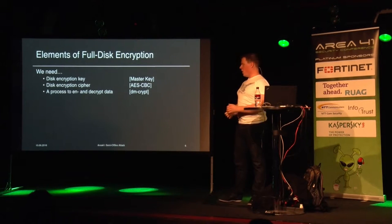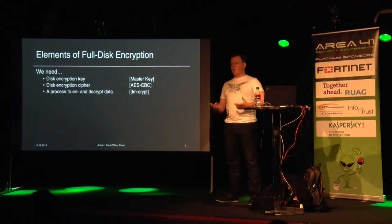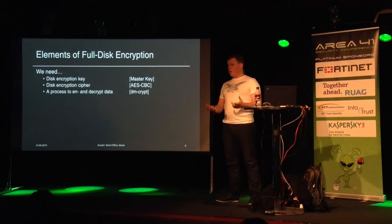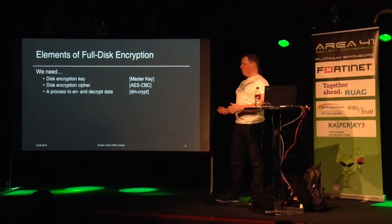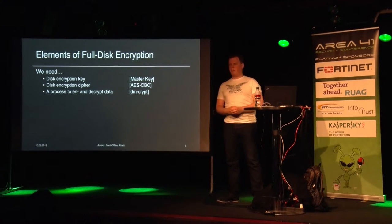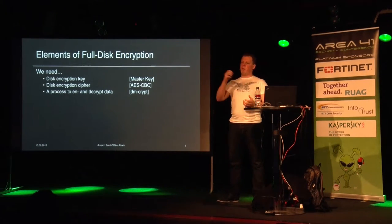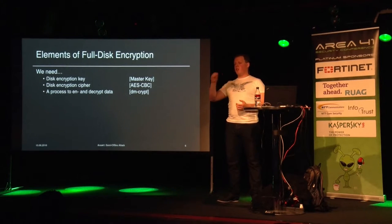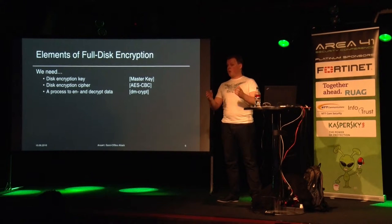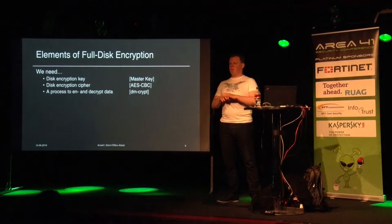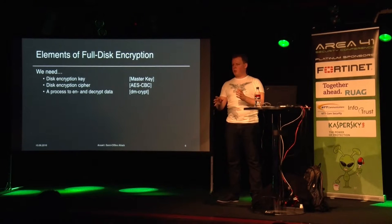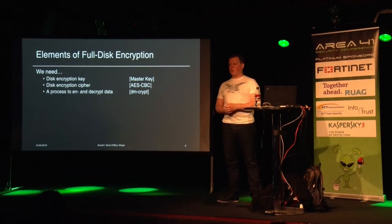The elements of full disk encryption are: we need an encryption key - Android calls that the master key - and we need an encryption cipher, which in Android is AES-CBC. For every read operation it decrypts the data, and for every write operation it encrypts the data. It is a transparent encryption: if you have access to a device which is encrypted and nothing prevents you from accessing the data, like screen authentication, you have access to the encrypted data.